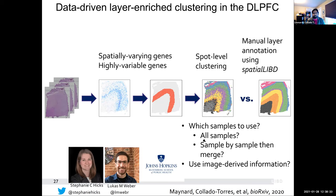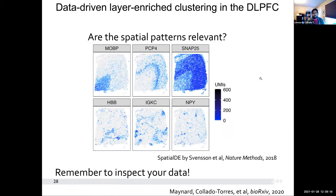Something else we wanted to do was work on the method side — to see if we can do a better job of assigning each spot to a given layer. What we can do is try to find either spatially or highly variable genes, do spot-level clustering, and use either unsupervised or semi-supervised methods, then compare them to the manual annotation. Right now we only have 12 samples so you can manually annotate them, but in the future we might have a lot more. We're actually working on generating new samples.